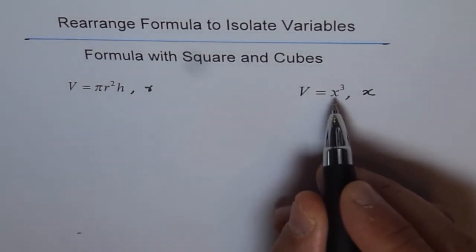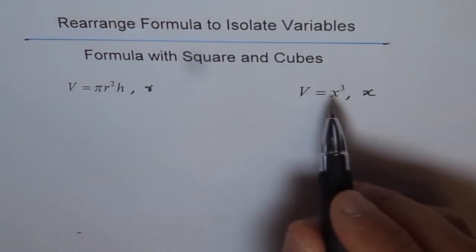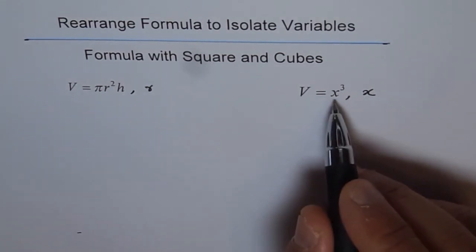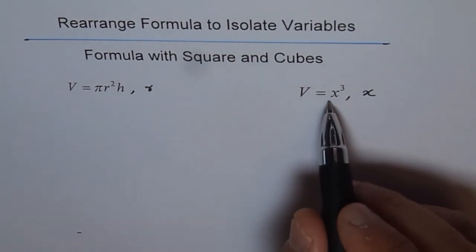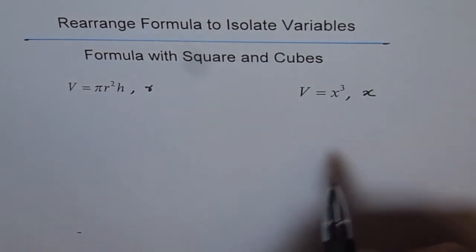Volume V equals to X cube. That is a volume of a cube, right? Cube with sides of X. Now from here we need to isolate X. So how do we do it?